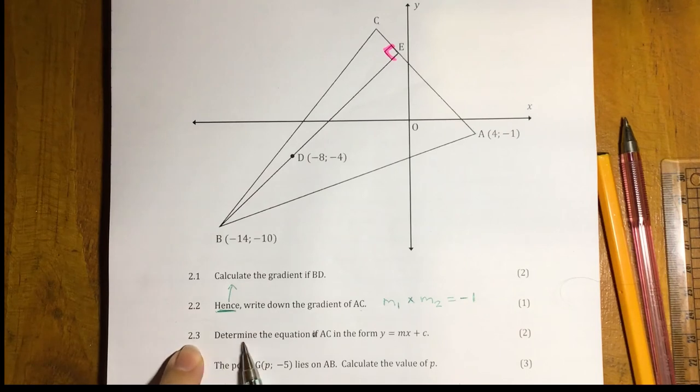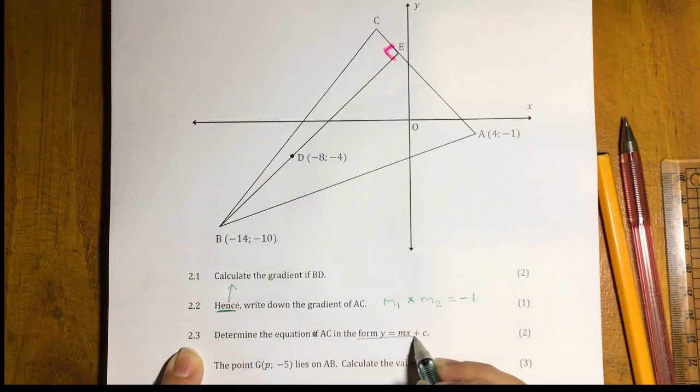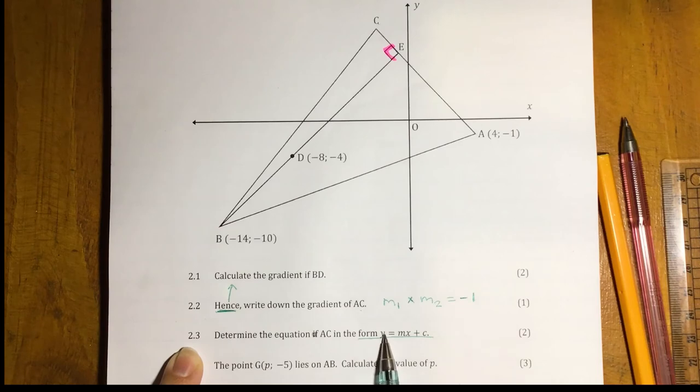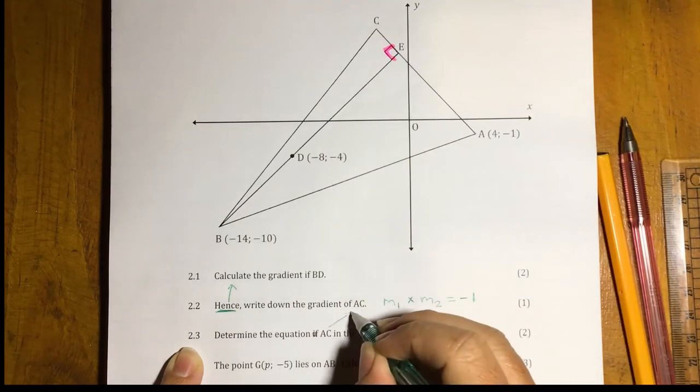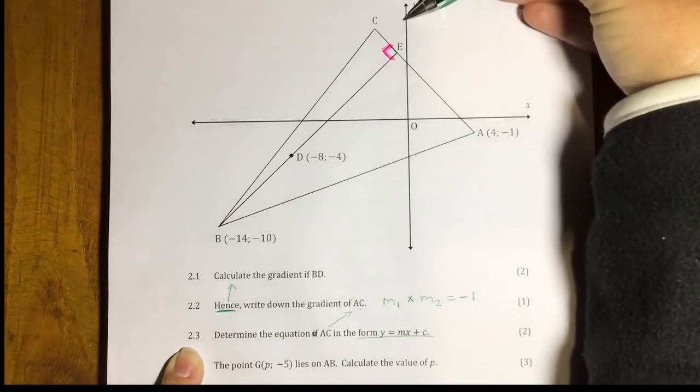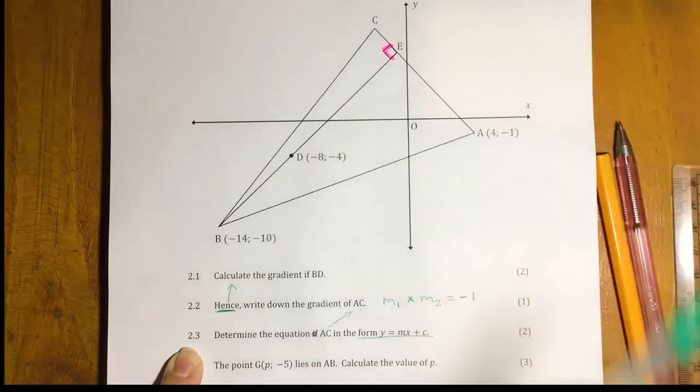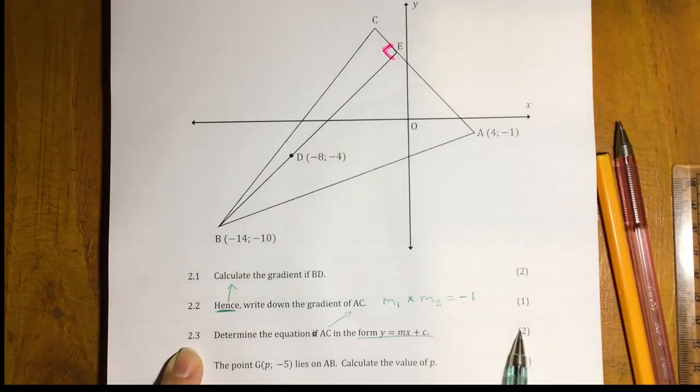2.3. Determine the equation of AC in the form Y equals MX plus C. Now, they have told us very specifically what form our answer should be. So when you get to your answer, make sure that you solve for Y equals. And we're looking at AC. Now, we've just worked out the gradient of that line. So we have the gradient and we have a point. So very much, as you can see, two marks, straightforward question to work out the equation.